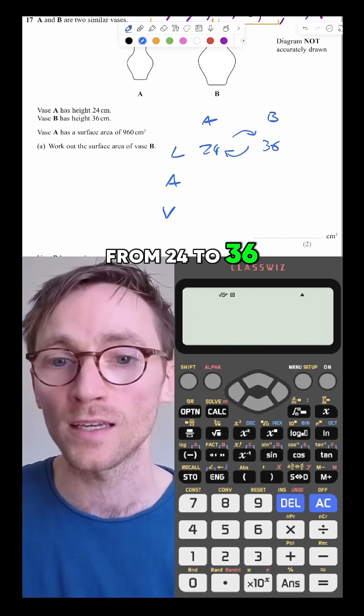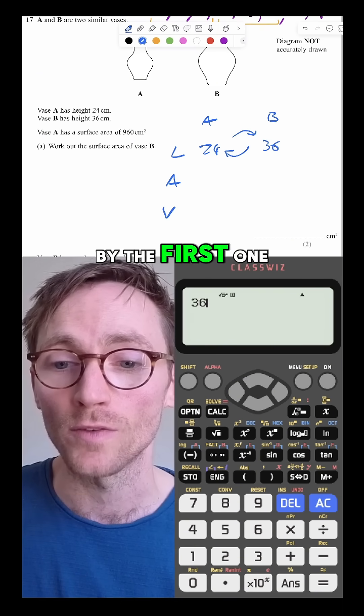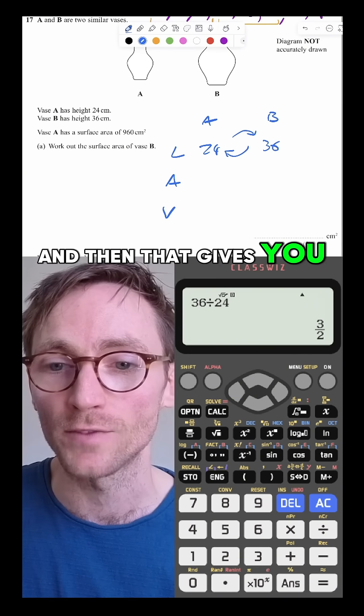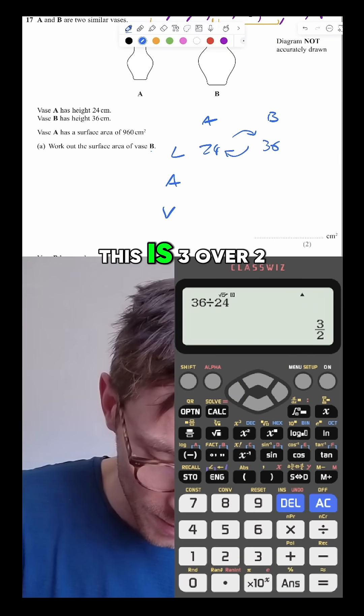So how do I get from 24 to 36? You divide the second one by the first one, and that gives you 3 over 2, the scale factor. This is 3 over 2.